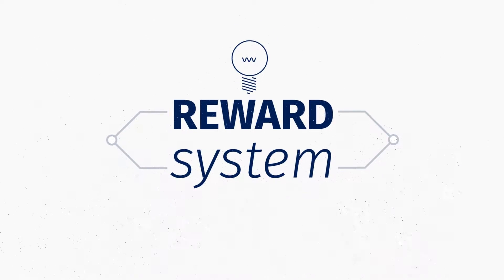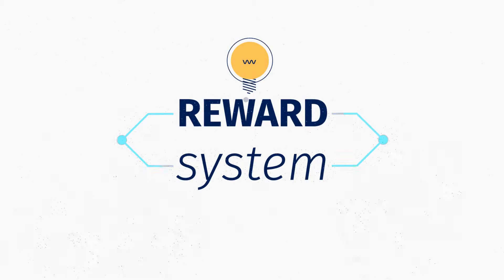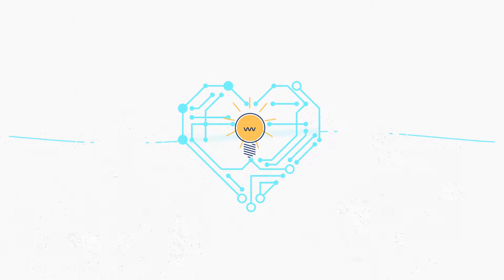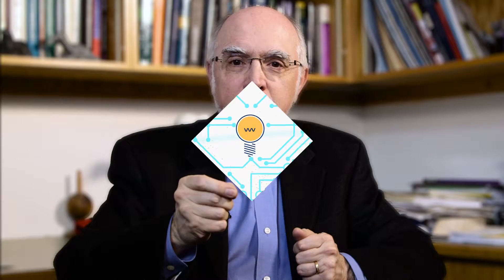We looked in the scientific literature and it turns out that there are many years of study of how both people and animals respond to what we psychologists call reward. There's a part of the brain known as the reward system. It's a fairly complicated circuit that becomes active when you receive these kinds of stimuli.